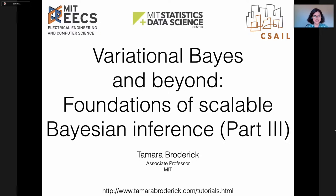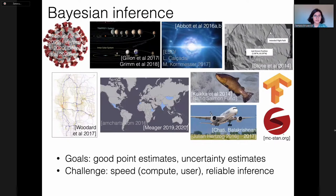Let's recap, because it's been a couple of days since the last lecture. At the very beginning of the first lecture, we spent time motivating why we care about scalable Bayesian inference. We went through real-world examples that are extremely important and time-sensitive — things like COVID, finding a lost airplane, fishery management, and generally science and technology — where people are using Bayesian inference in fundamental scientific, engineering, and social science advances.